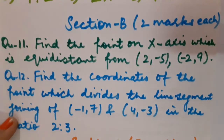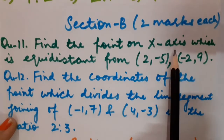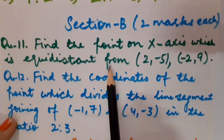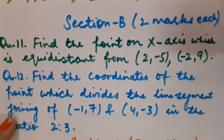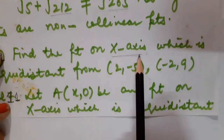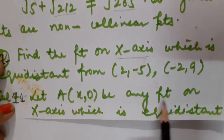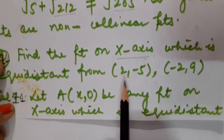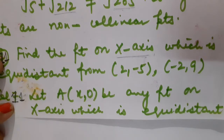We have discussed all MCQs. Now I am going to switch to section B, 2 markers each. Question number 11: find the point on the x-axis which is equidistant from (2,−5) and (−2,9). As the point lies on the x-axis, the y-coordinate must be 0. Let A(x,0) be any point on the x-axis equidistant from (2,−5) and (−2,9).